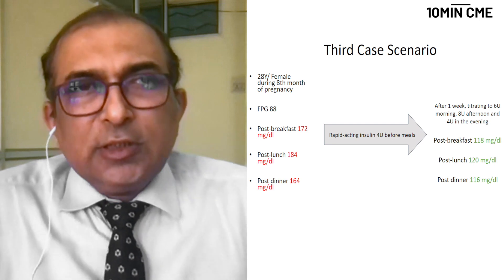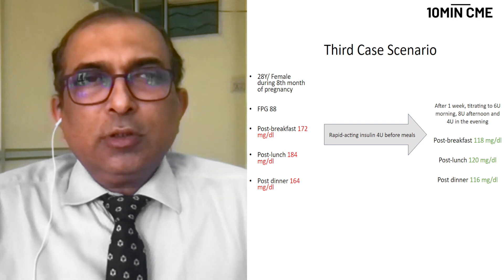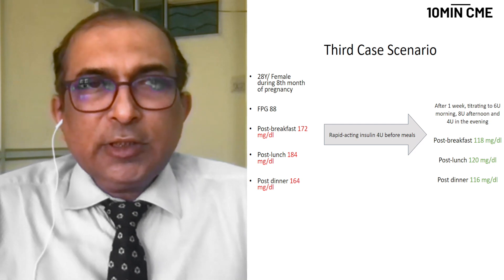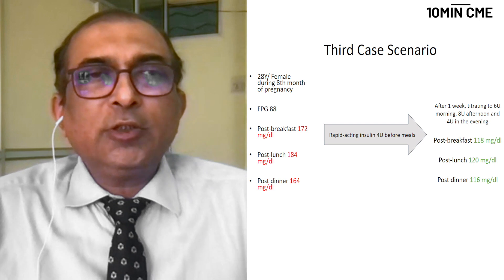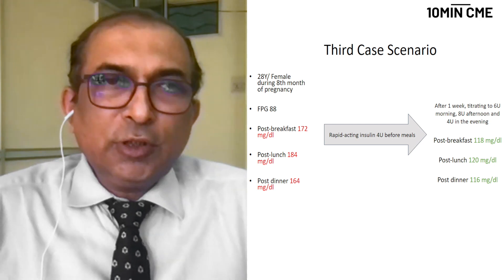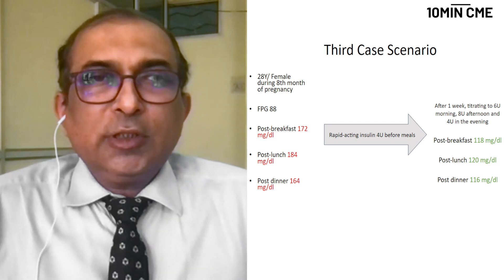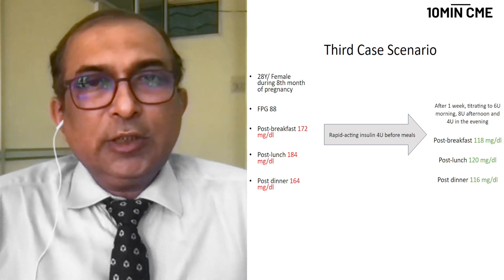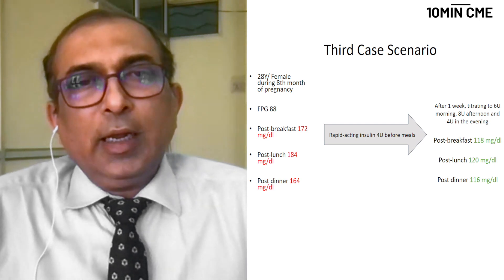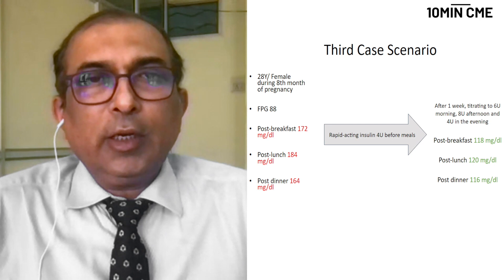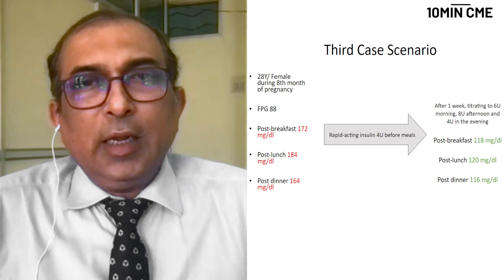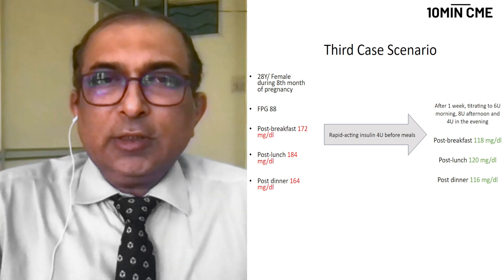With these three different scenarios, we have seen how insulin initiation in a patient with type 2 diabetes can be dependent on the needs and requirements of the patient. It has to be highly individualized, and different patients require different insulins for initiation. Titration of the dose after initiation is also very important, and once done properly, we can achieve adequate glycemic control with appropriate use of insulin at the required dose.